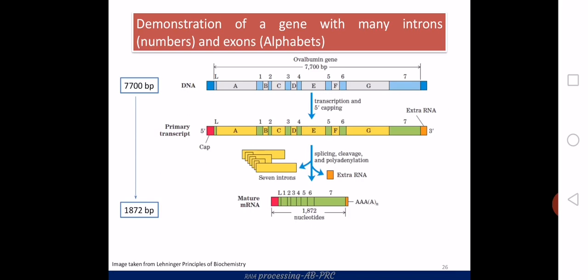This slide demonstrates a gene with multiple introns and exons and shows how processing occurs. The introns are shown in yellow and the exons in green. There is 5' capping and polyadenylation. The initial gene has a sequence length of around 7,700 base pairs, which is reduced to around 1,872 base pairs at the functional stage, demonstrating the extensive removal of non-coding regions through the splicing mechanism.